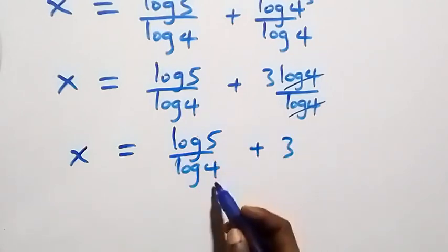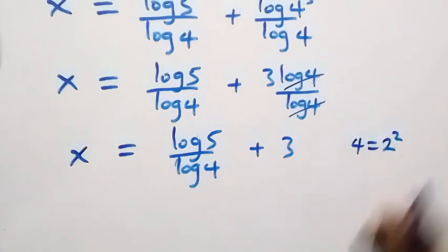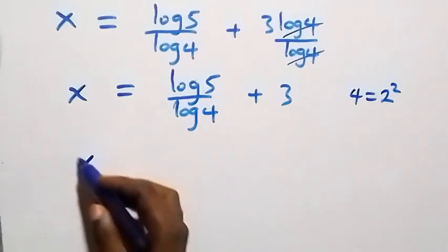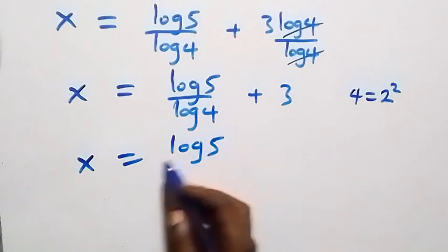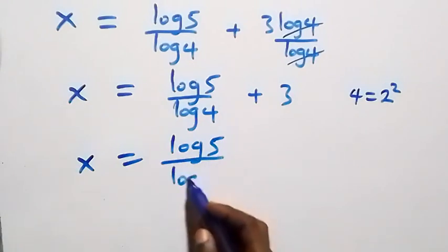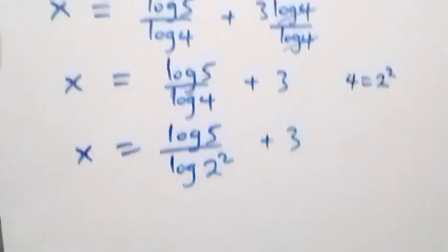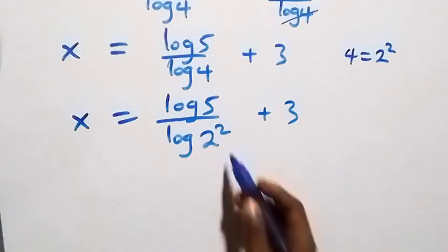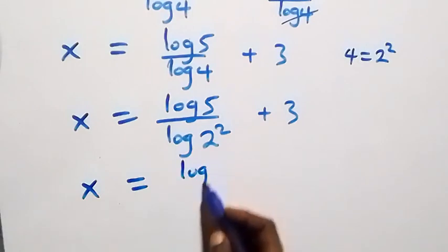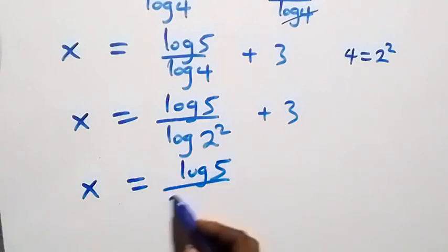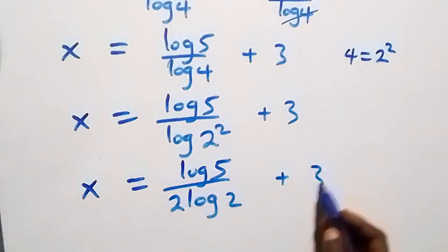Next, we can express 4 as 2 times 2, which is 2 squared. This implies x equals log 5 over log of 2 squared, plus 3. Applying the power law, the 2 comes down, giving x equals log 5 over 2 log 2, plus 3.